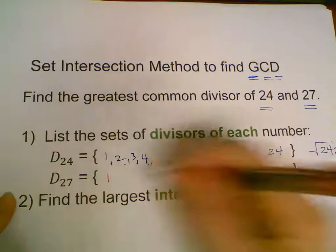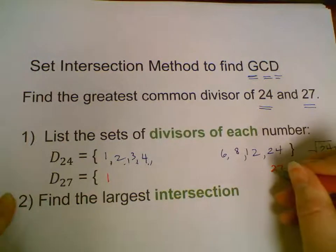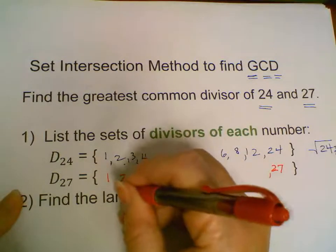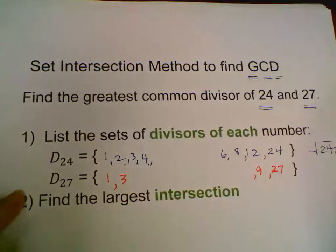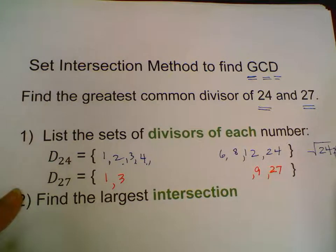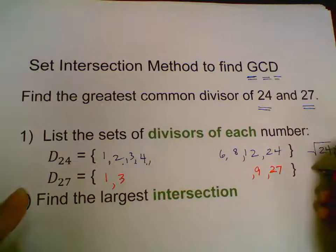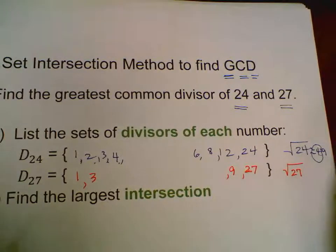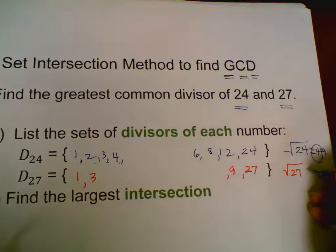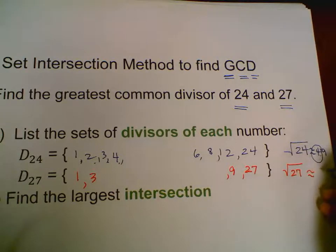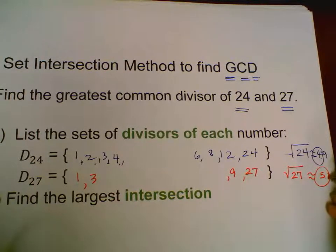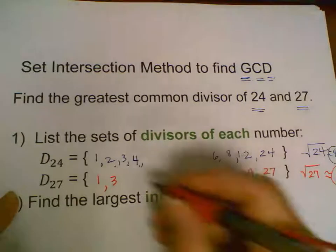Let's look at the factors of 27: 1 times 27, 2 doesn't work because 27 is not even, 3 is a factor of 27, 3 times 9, those are both factors. I'll check 4, it's not a divisor, 5 is not a divisor.